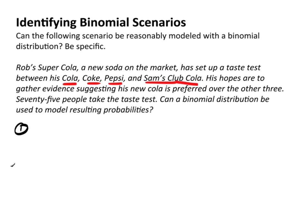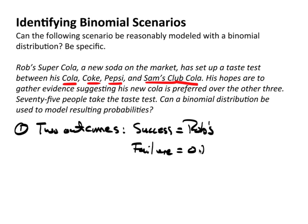Well, let's see. I'm going to do these out of order because there is no real order to it. I'm going to start off with two possibilities. Are there two possible outcomes here, something that can cause success and a failure? There's four different sodas, but that's okay because what are we asking? Do they like Rob's better than the other? So I'm going to say two outcomes.